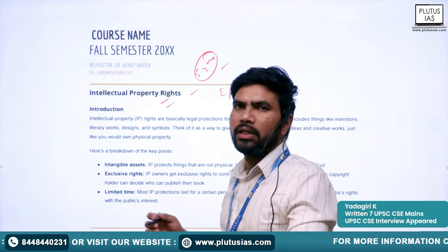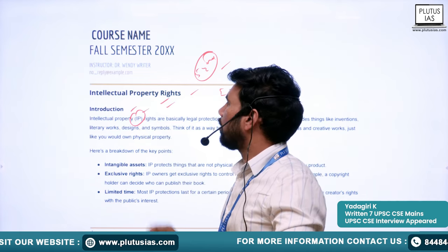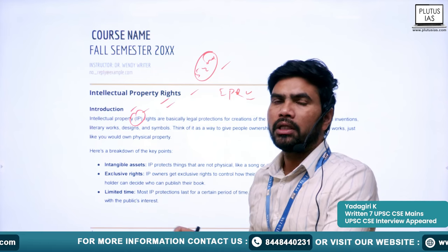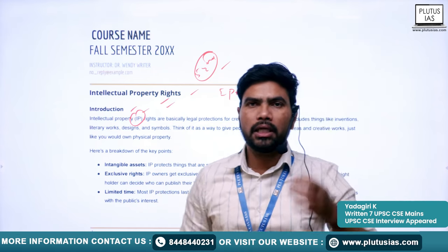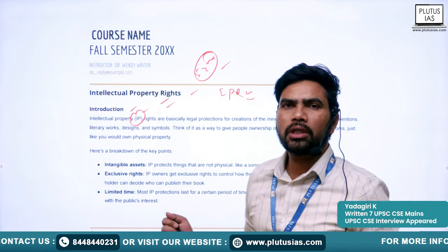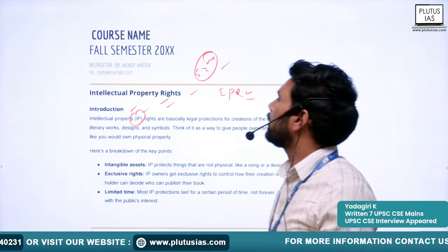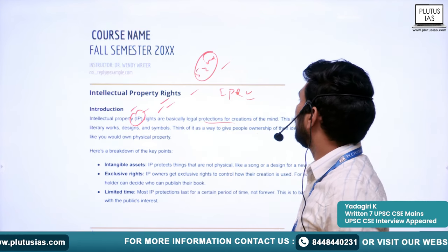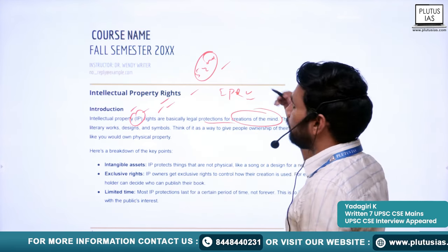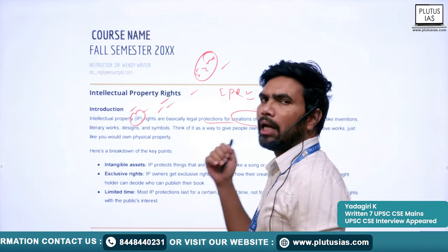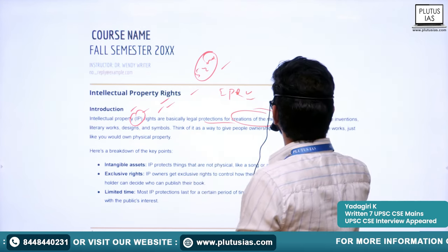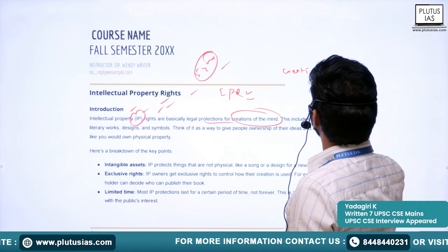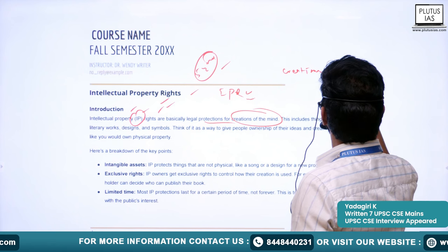First we will try to understand what is IP — intellectual property — then we will see different types of intellectual properties, and also the legal backing available in India for those types of intellectual property rights. Intellectual property rights are basically legal protections for the creations of the mind. Remember this phrase: creation of the mind.